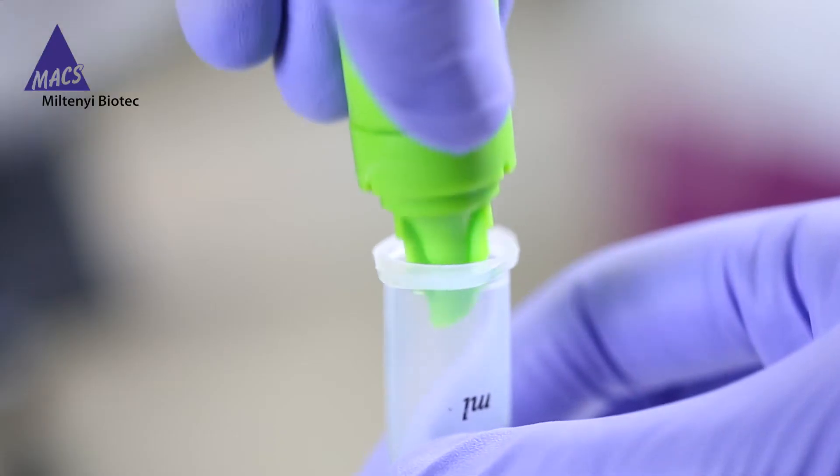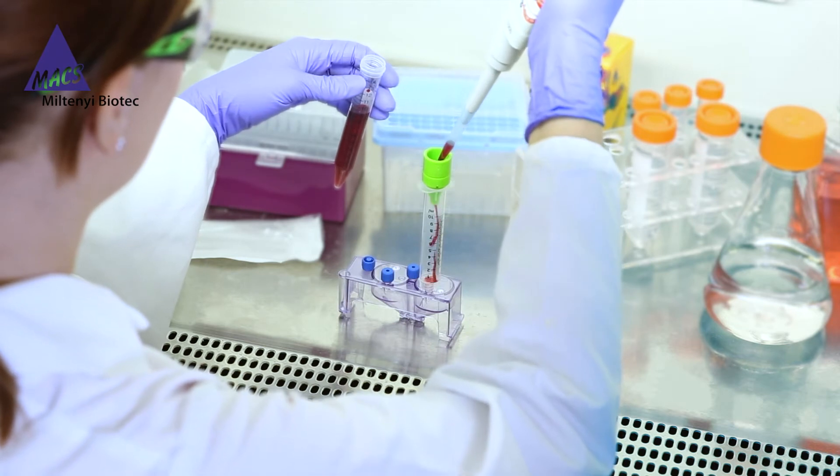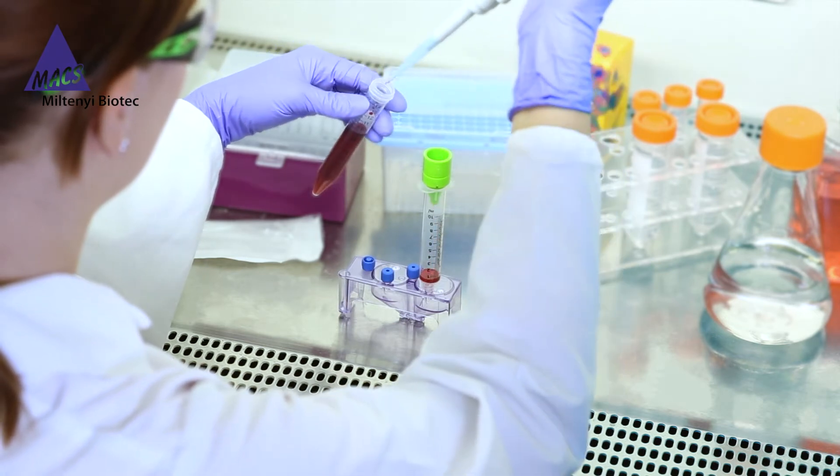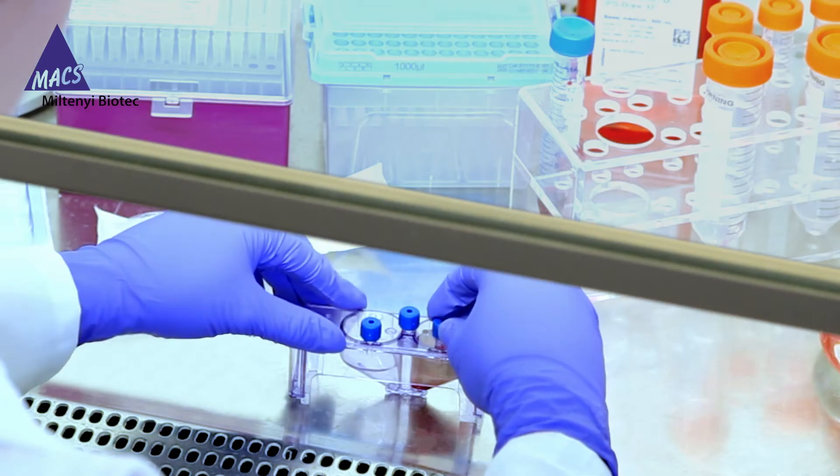Before the sample is applied, a pre-separation filter is placed on top of a syringe. To maintain sterility, you can load the cartridge under a laminar flow hood. The cap is screwed back on before removing the cartridge from under the hood.